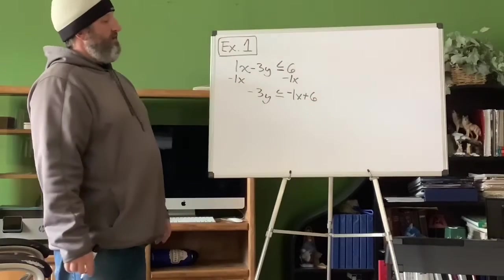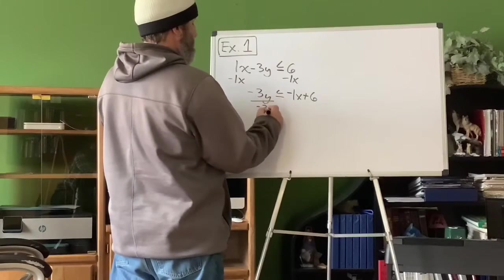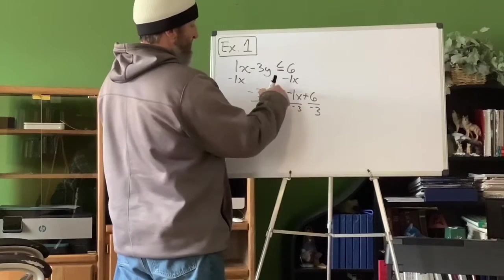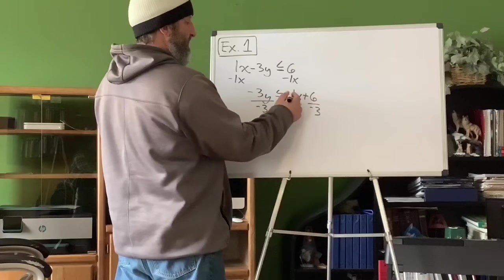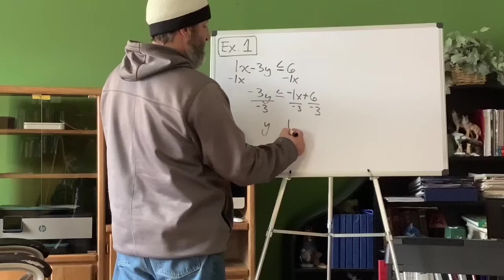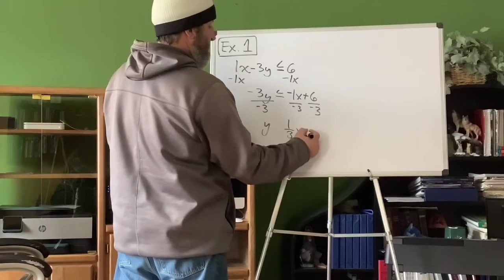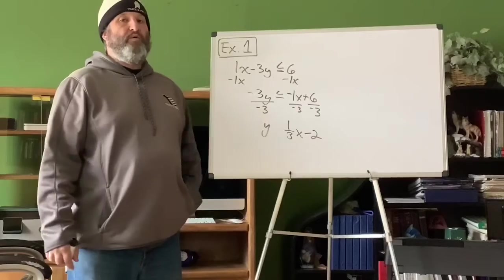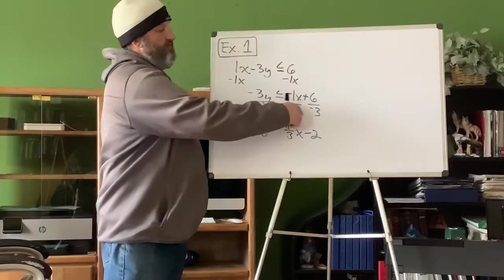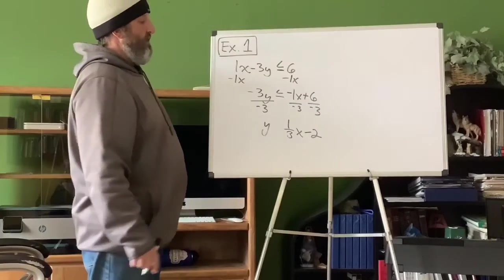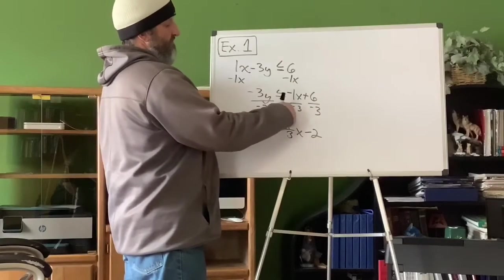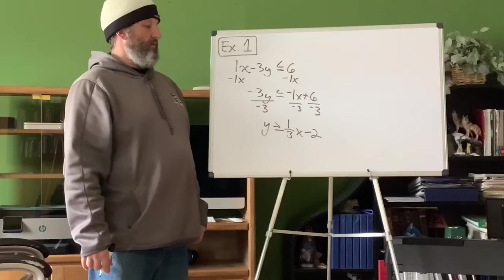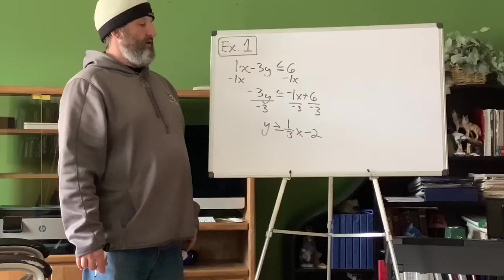Now I'm going to divide by negative 3 on both sides. That leaves me with y. Negative 1 divided by negative 3 is positive one-third, and positive 6 divided by negative 3 is negative 2. Now remember: whenever we multiply or divide by a negative, we have to flip the inequality. So this was less than or equal to — now it's got to flip to greater than or equal to.